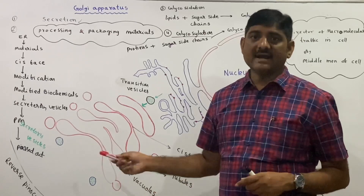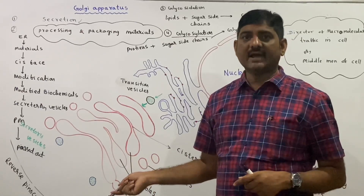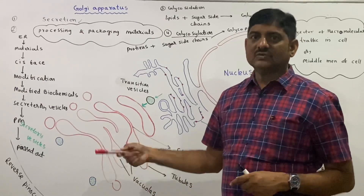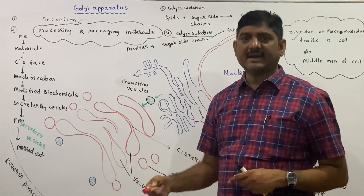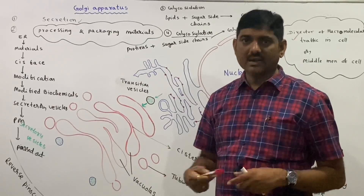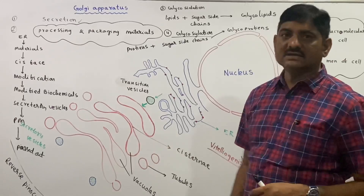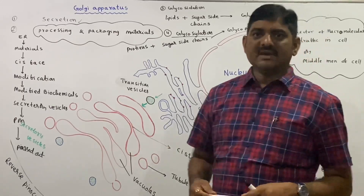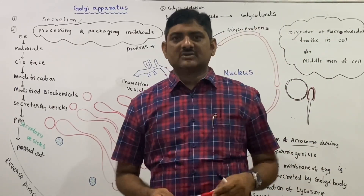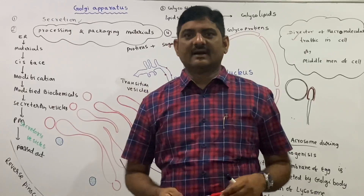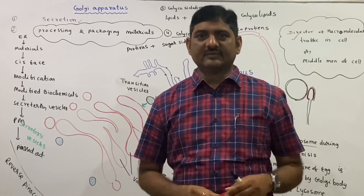In plant cells, the Golgi apparatus is called dictyosomes, and these are interconnected in plant cells. This concludes the topic of the Golgi apparatus. If you like the video, please like and comment. Thank you!